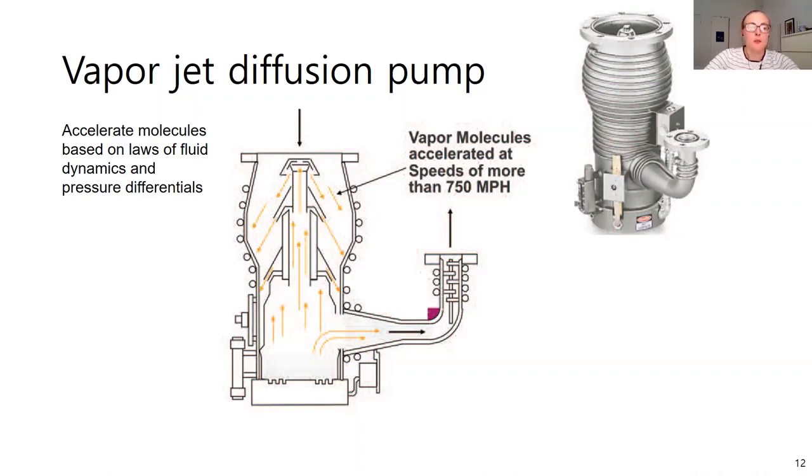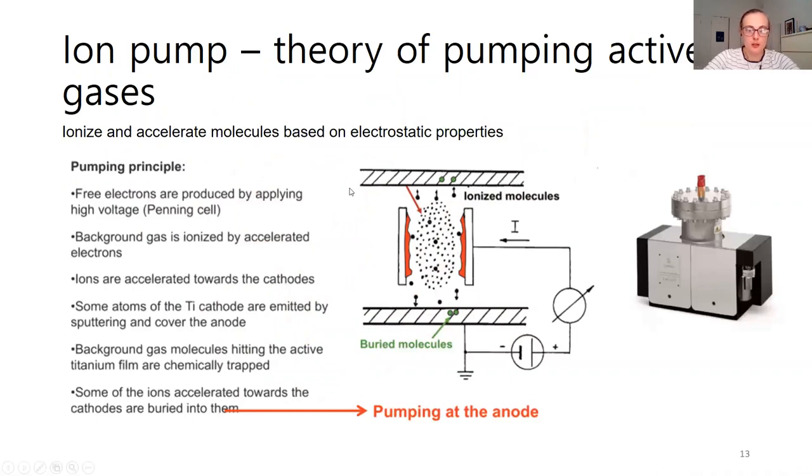You can also charge your molecules as well with an ion pump. Here's an example of this. You're going to ionize the gas that's in your system and then you are going to use some electrical charge differential and have a cathode or an anode where your ionized gas molecules will then absorb onto your cathode. So you're absorbing those gas molecules based on electrostatic interactions.